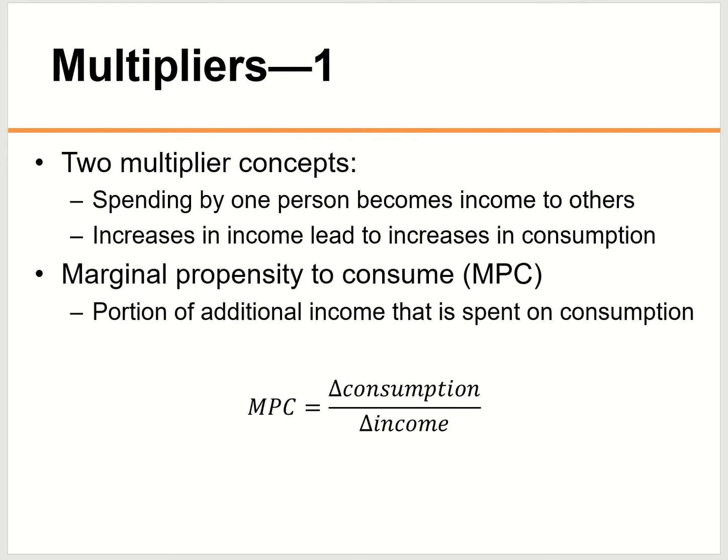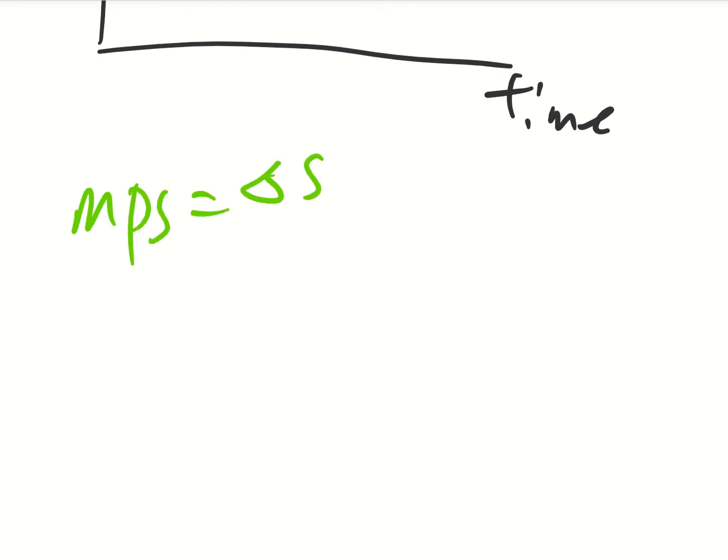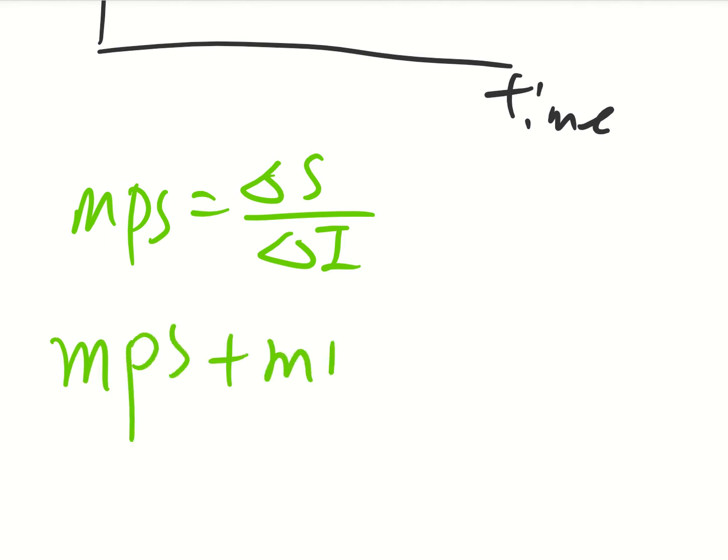The next topic is the multiplier effect. The multiplier is that the action of one initial impact can cause multiple actions in the economy — like throwing a rock into a pond of water, you're going to have multiple ripples. To understand the multiplier effect, you need to know what's called marginal propensity to consume (MPC): the proportion of your additional income that is spent on consumption. The formula is change in consumption over change in income. MPS is your marginal propensity to save: change in saving over change in income. And MPS plus MPC equals one.